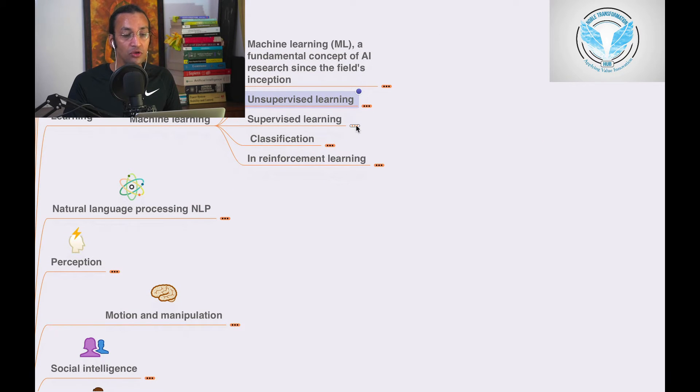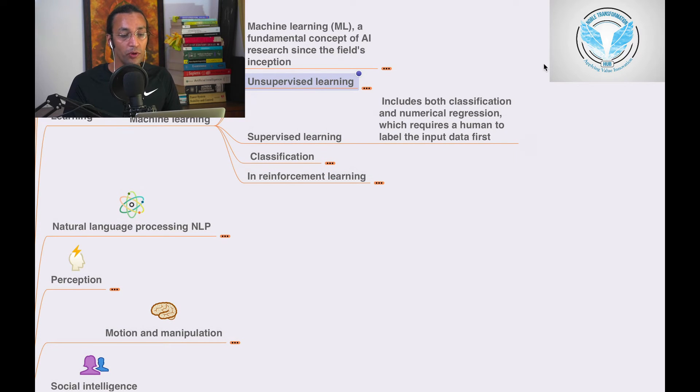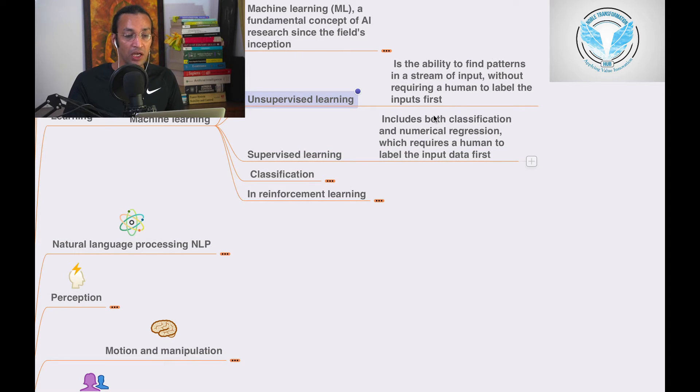We have unsupervised learning and supervised learning. Supervised learning includes both classification and numerical regression, which requires a human to label the input data first.